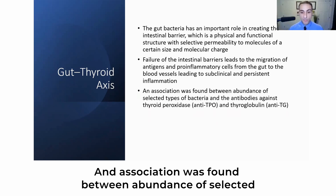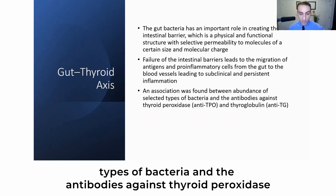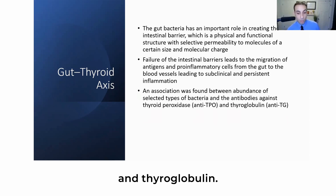An association was found between the abundance of selected types of bacteria and the antibodies against thyroid peroxidase and thyroglobulin.